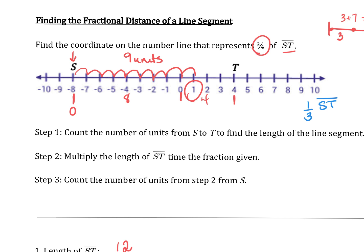So first thing again, first step is to count the total number of units of the line segment. And as we've previously done, we know that ST has a length of 12. So then I'm going to multiply it by the fraction or the portion of the segment we're looking for, in this case, 1 third.